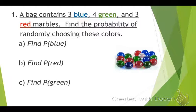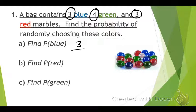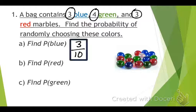Favorable is the thing we're looking for — blue. How many blue are there? Three. So three becomes the favorable amount over the total. How many total marbles are there? Ten — three blue, four green, and three red add up to ten. Can three-tenths be reduced? No. So there is a three out of ten chance that I would pull out a blue marble.